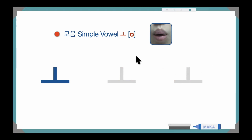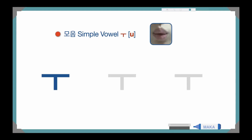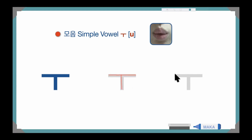And the next vowel is 'ooh', 'ooh', 'ooh', 'ooh'. Okay, let's write: from left to right, top to bottom — 'ooh', 'ooh', 'ooh'.